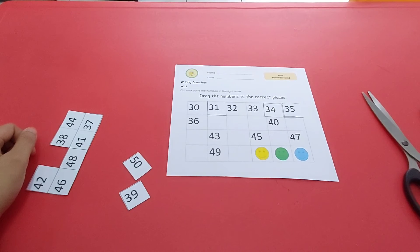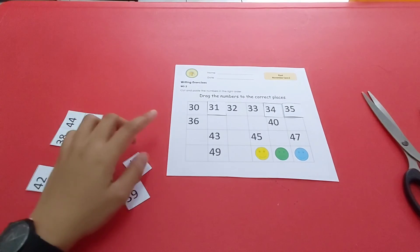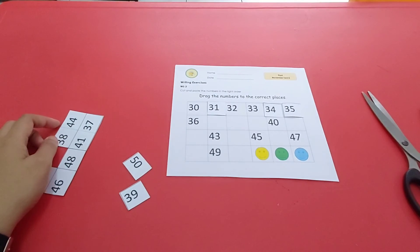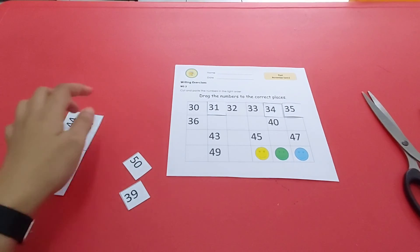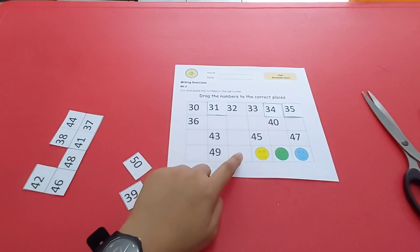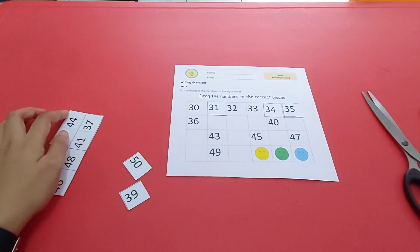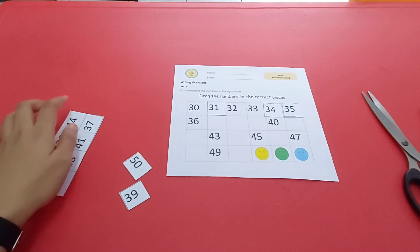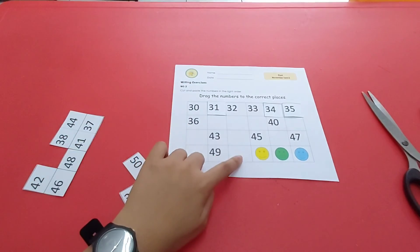And all you have to do at your home is finish this worksheet. Paste all the numbers in order, from 30 up to 50. Yang anak-anak harus lakukan adalah menempel dan mengurutkan angka dari 30 sampai dengan 50 di rumah.